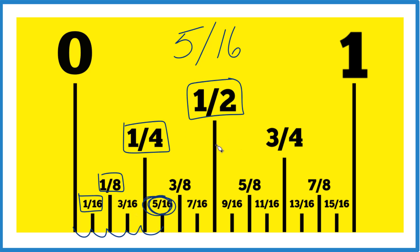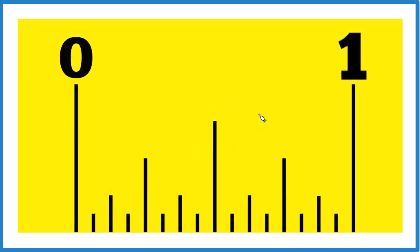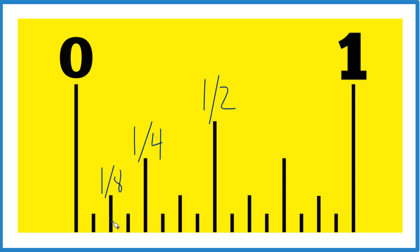So let's do this again, but on a blank ruler or tape measure — give you a chance to try that. We take this, cut it in half. That gives us one half. Take that one half, cut it in half. That gives us one fourth. Do it again with the fourth, that gives us the eighth. And then the eighth — we cut that in half, we get one sixteenth.